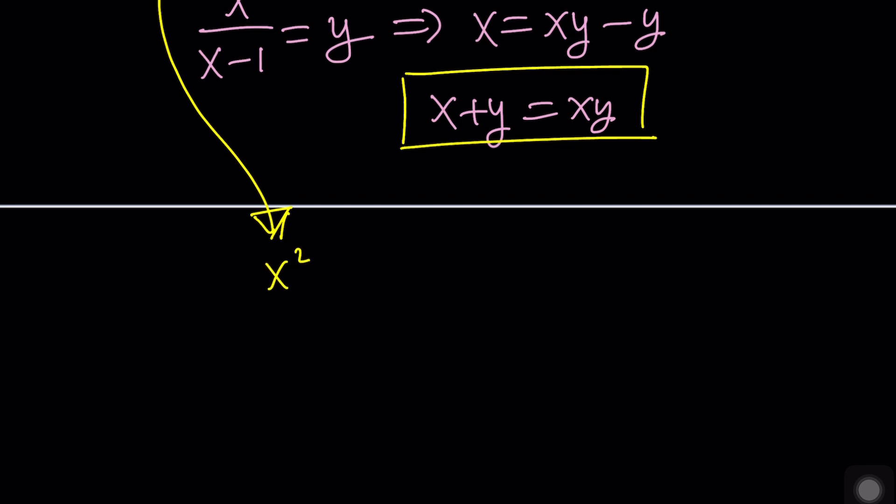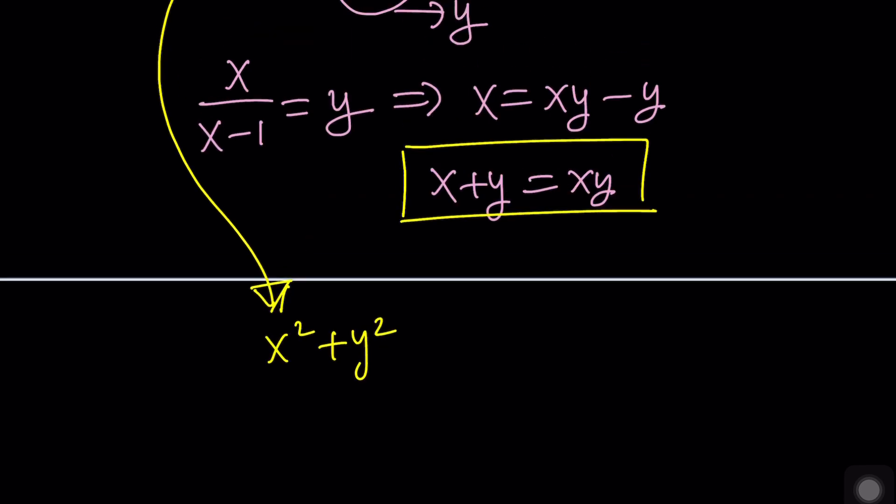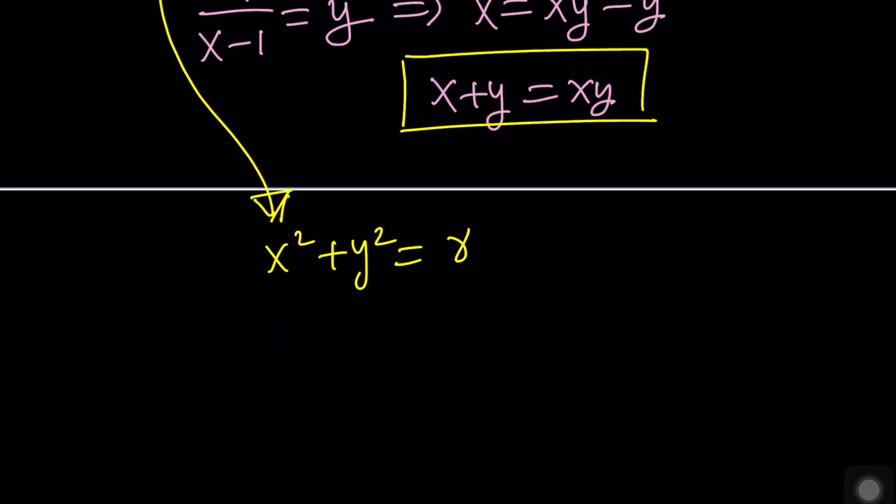Now, look at this. We have two equations and two variables, but it's much, much better than the original one. Don't you think? Especially if you're good with identities, and you should be. If you watched my channel, videos on my channel, you should definitely know these tricks because we talk about these a lot. Okay?